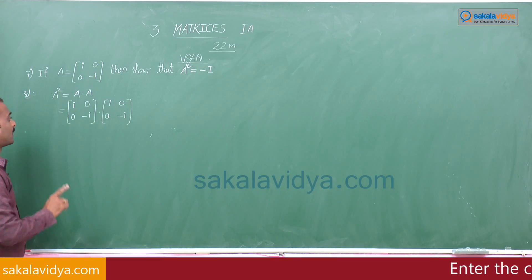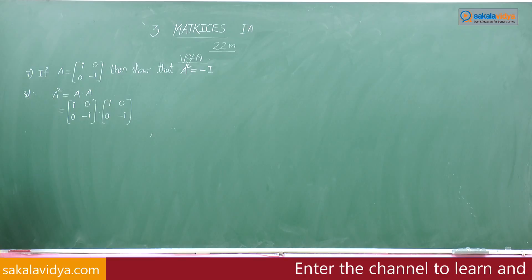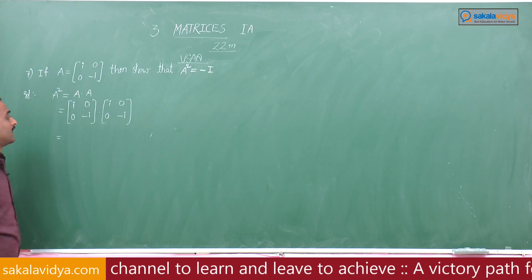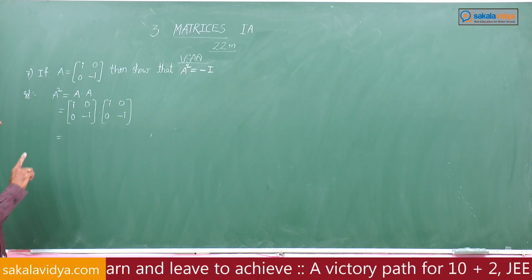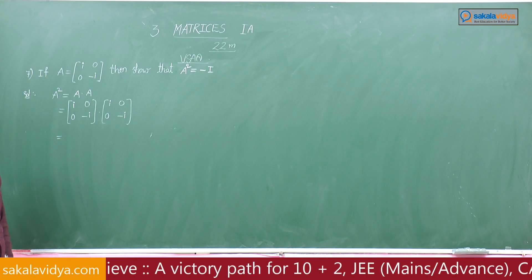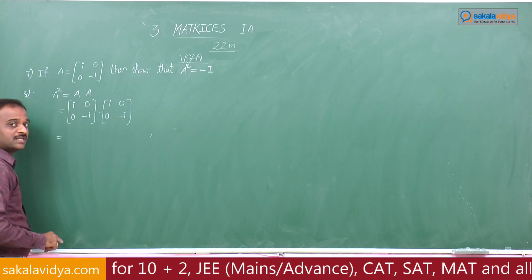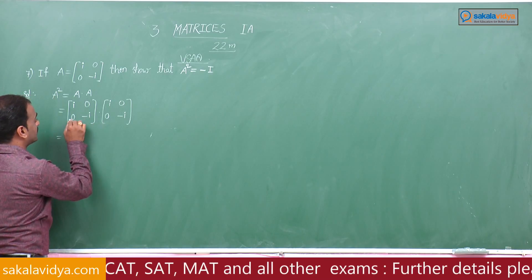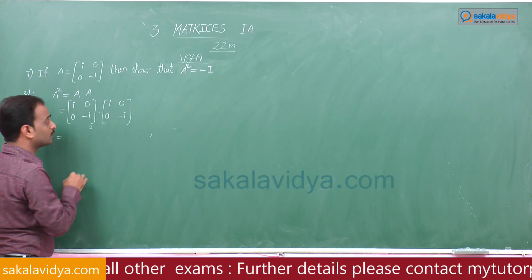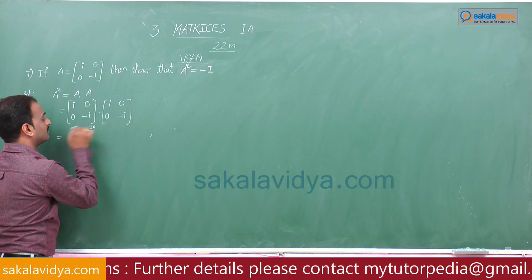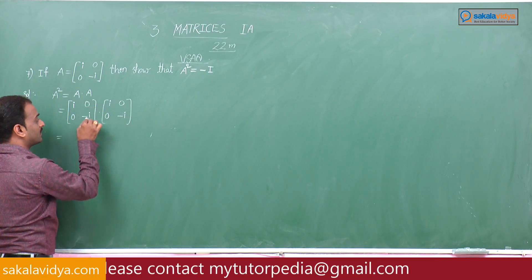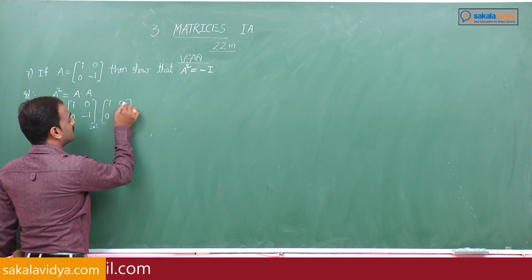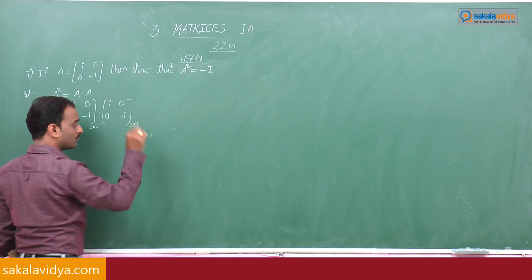To find the product of any two matrices, the number of columns in the first matrix must equal the number of rows in the second matrix. The first matrix has 2 rows and 2 columns, so it is of order 2×2. The second matrix is also of the same order 2×2.